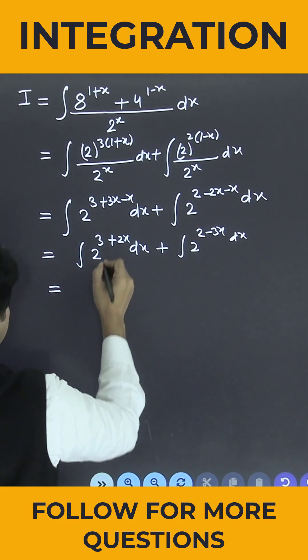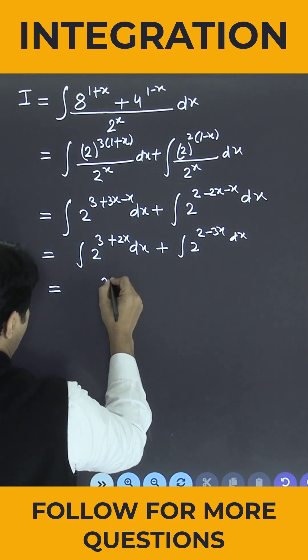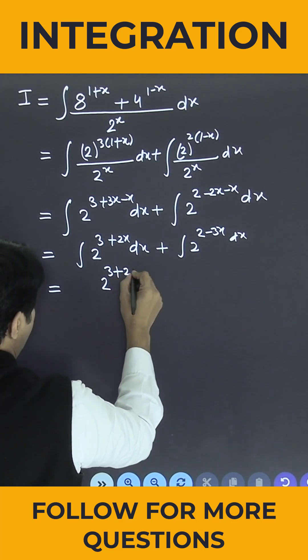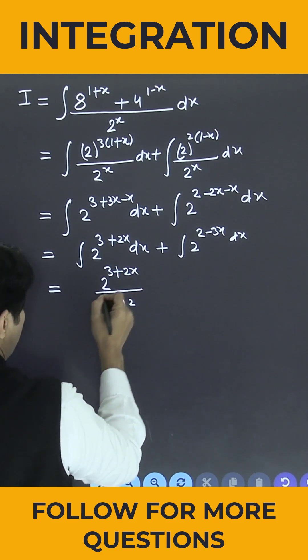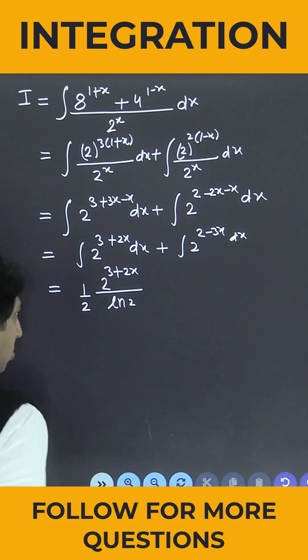So if you solve this integration, it will be 2 to the power 3 plus 2x, divided by ln 2. What is the coefficient of x? It is 2, so this 2 will come in the denominator.